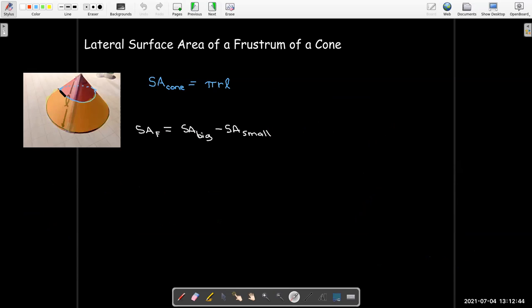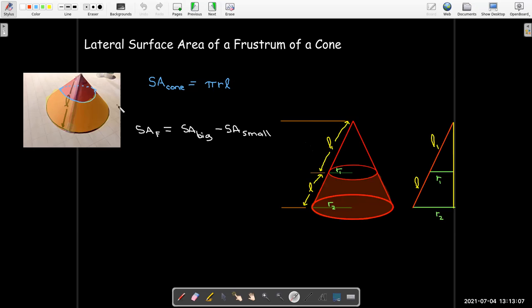What about the frustum? Well, how do we get a frustum? We take the original cone and remove a small cone from the top. So all we need to do is take the lateral surface area of the big cone and subtract off the lateral surface area of the small cone. Now we're going to make the slice parallel to the base. So we have two similar figures. I'm going to change my notation to be consistent with the book. So now the lowercase l only represents the portion on the frustum, and the whole cone has a lateral length of l plus l₁.